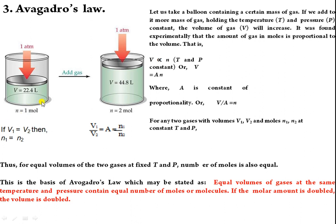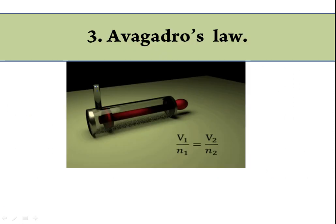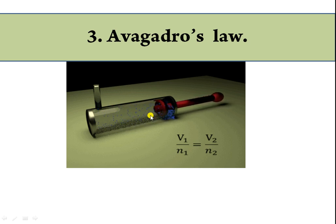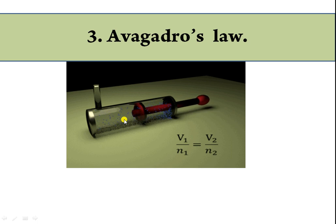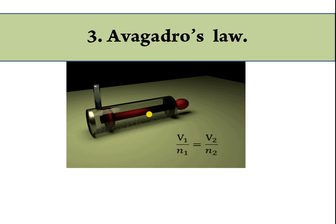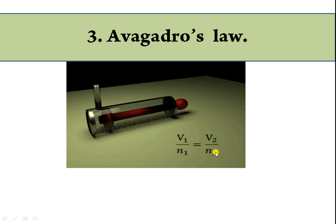Avogadro's Law states that equal volumes of gases at the same temperature and pressure contain equal numbers of moles or molecules. If the molar amount is doubled, the volume is also doubled. For example, as you increase the number of moles, volume increases because the gas requires more space, so V₁/n₁ = V₂/n₂.